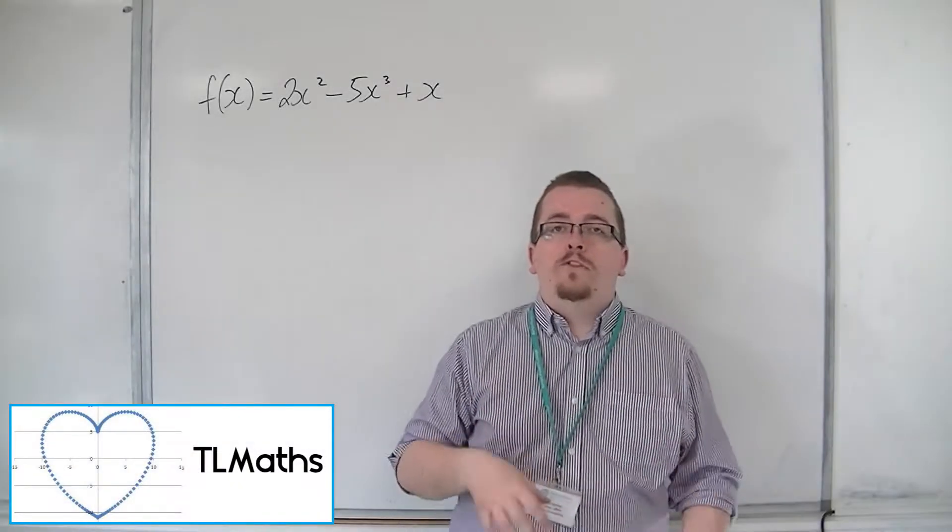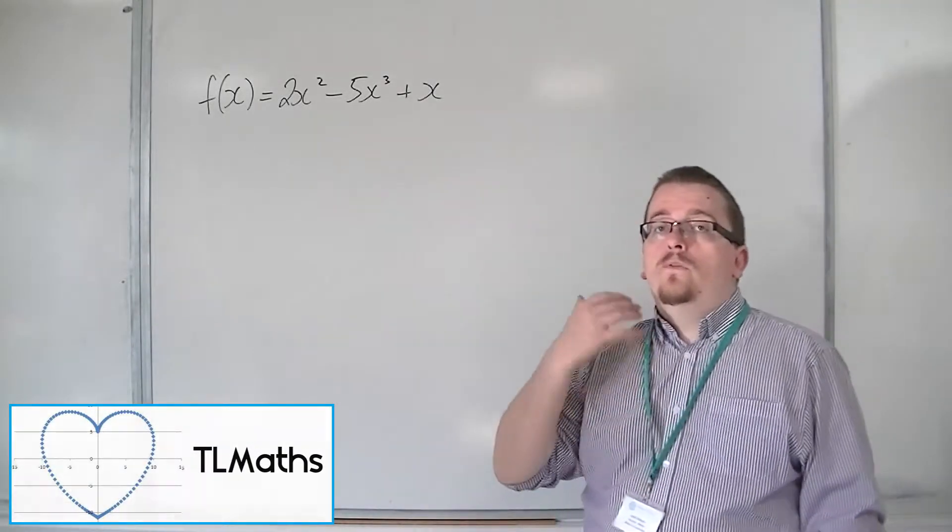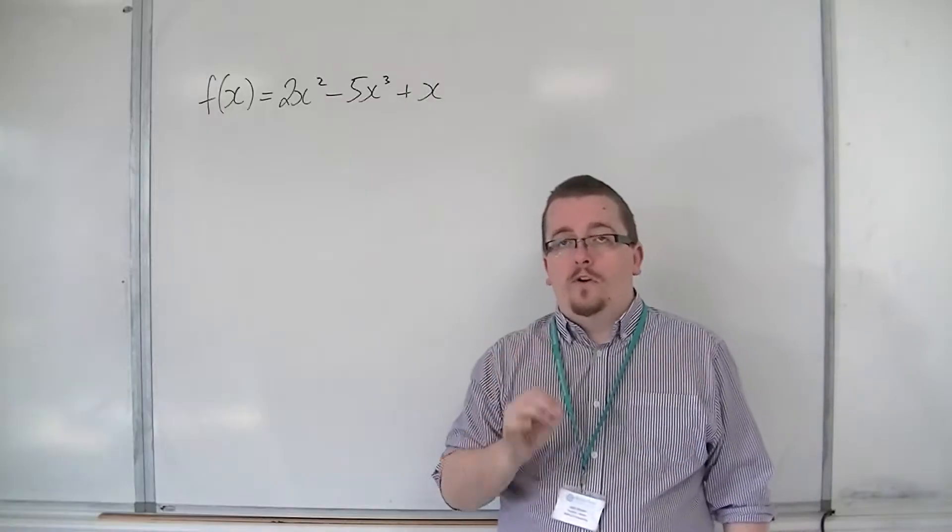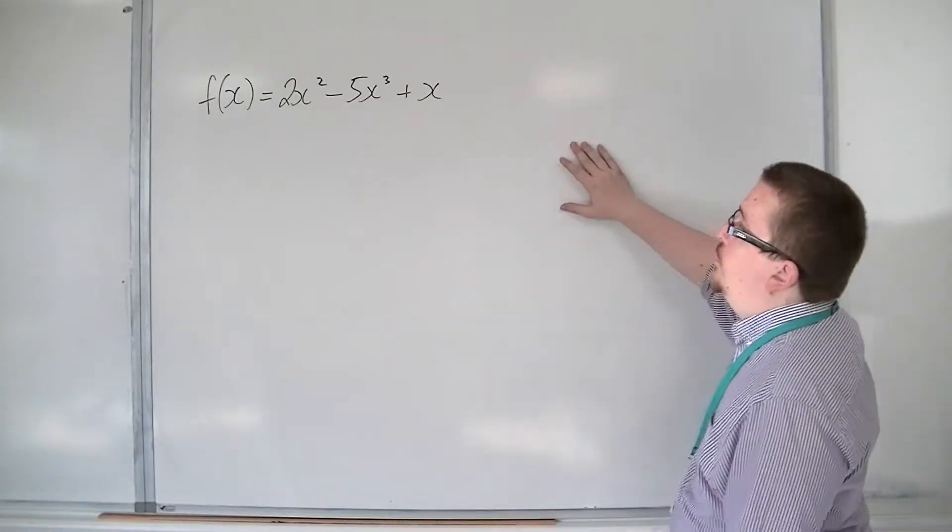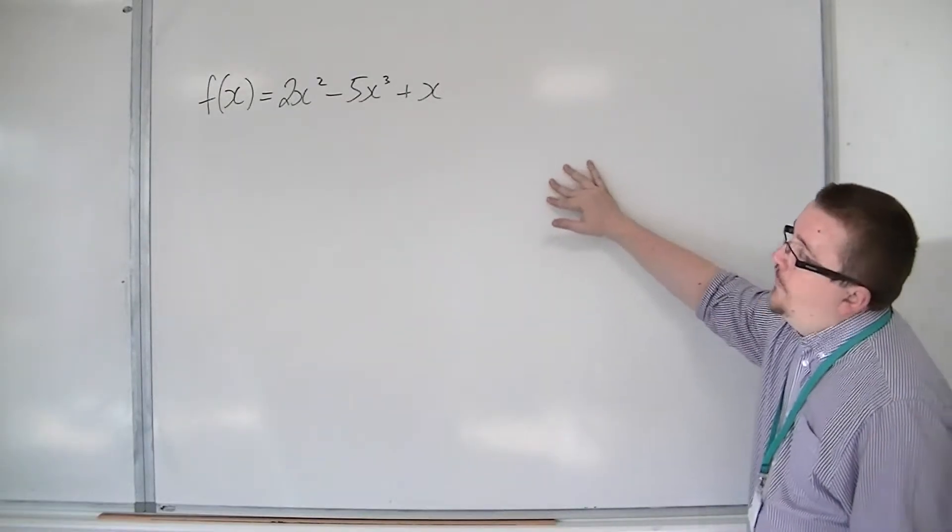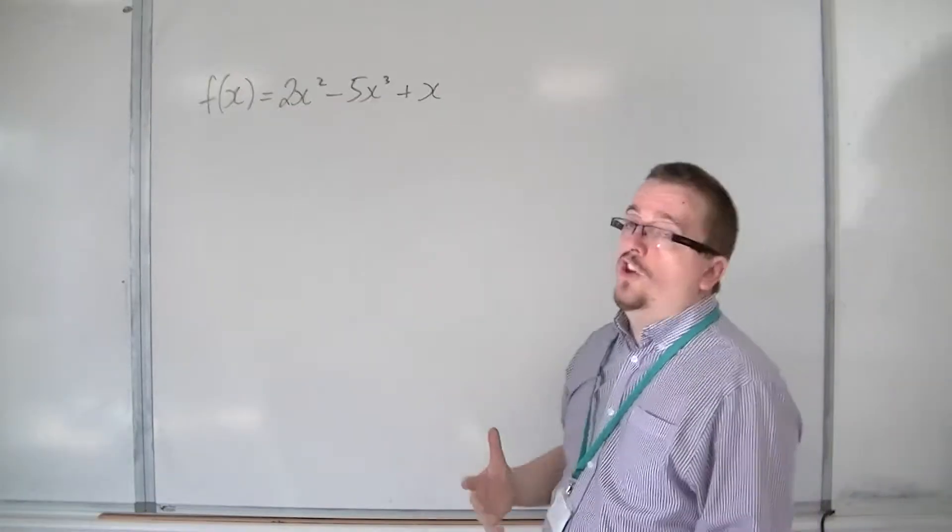We've seen how we can show that a function is even, and we've seen how we can show that a function is odd. We're going to try this one next. f of x is equal to 2x squared minus 5x cubed plus x.